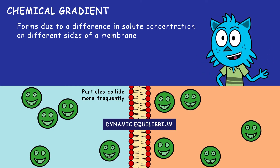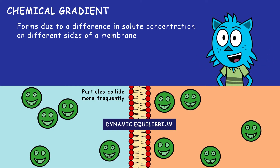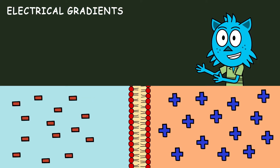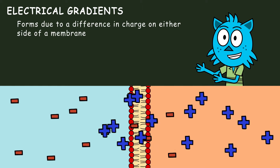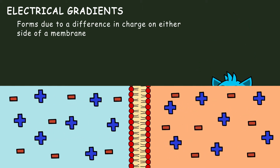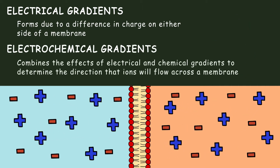The particles keep moving, but most of the time they are about evenly distributed on either side of the membrane. Similarly, an electrical gradient forms due to a difference in charge on either side of a membrane. An electrochemical gradient combines the effects of electrical and chemical gradients to determine the direction that ions will flow across a membrane.